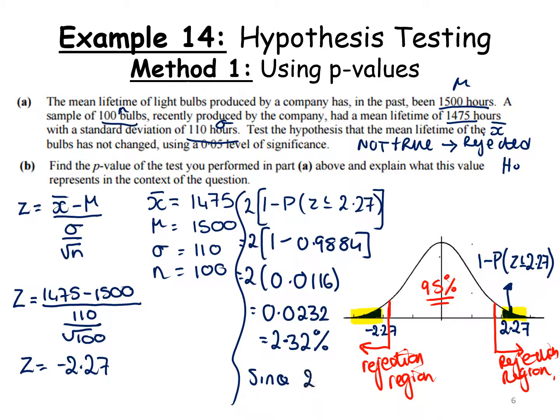Since 2.32% is less than 5%, we reject the null hypothesis H₀. Thinking back to the previous part, we already said we rejected the null hypothesis in part A, so this matches, which is really important.